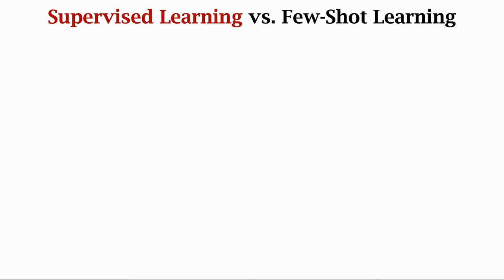In this figure, the x-axis is the number of shots (the number of samples per class) and the y-axis is the prediction accuracy. As the number of shots increases, the prediction accuracy improves. The phenomenon is easy to interpret. With more samples per class, the prediction becomes easier — thus two-shot is easier than one-shot.